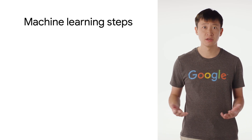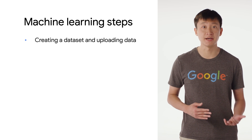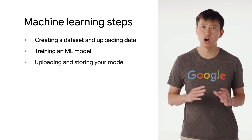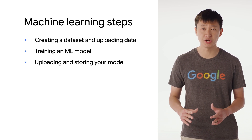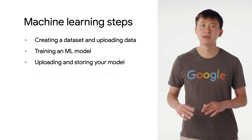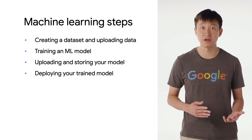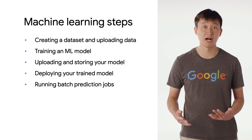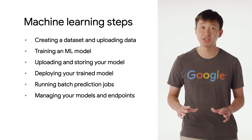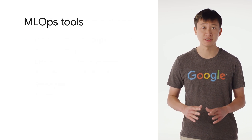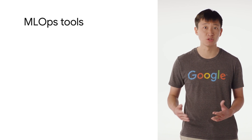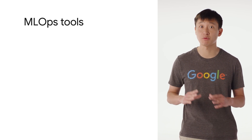This includes creating a dataset and uploading data, training an ML model on your data, uploading and storing your model in Vertex AI, deploying your trained model to an endpoint for online predictions, running batch prediction jobs, and managing your models and endpoints. Vertex AI also features ML Ops tools to easily manage your data and models with confidence and repeat at scale.